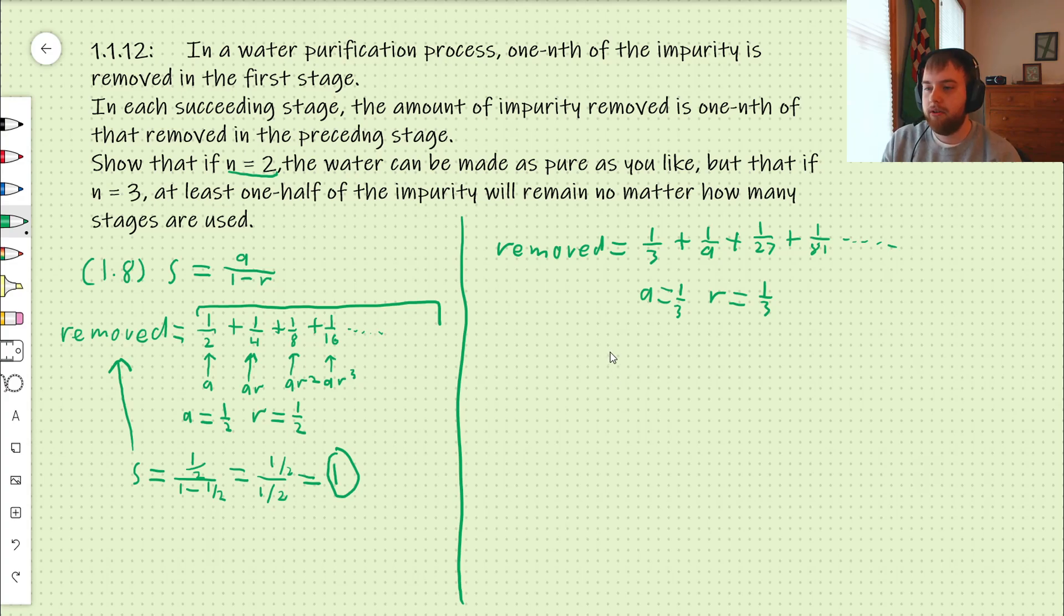As such, we can apply formula 1.8, and the sum of the entire series from the first term to infinity is 1 third over 1 minus 1 third. So, this is 1 third over 2 thirds, which is equal to 1 half.